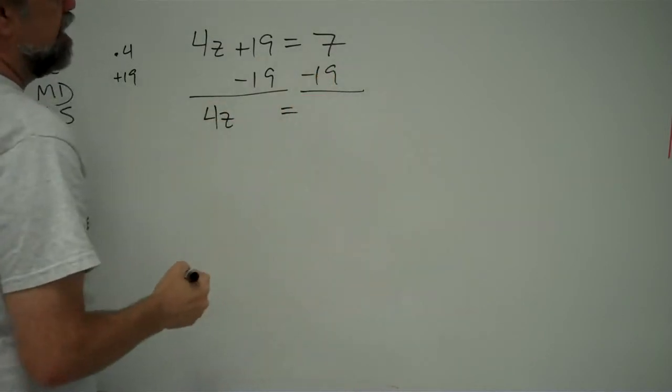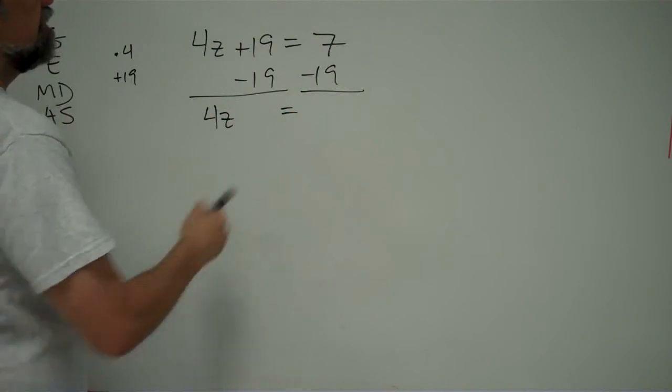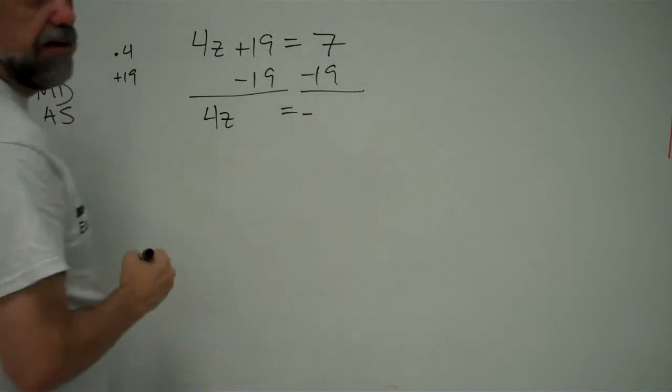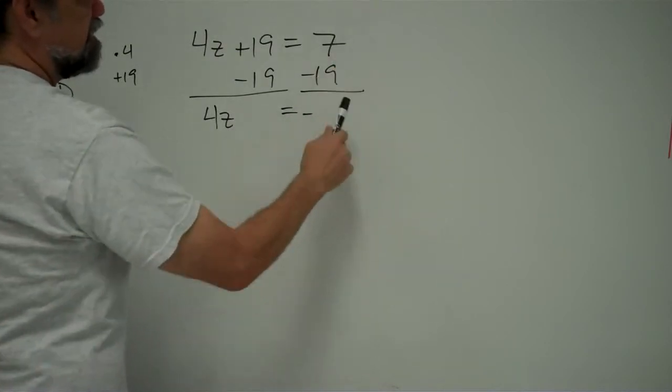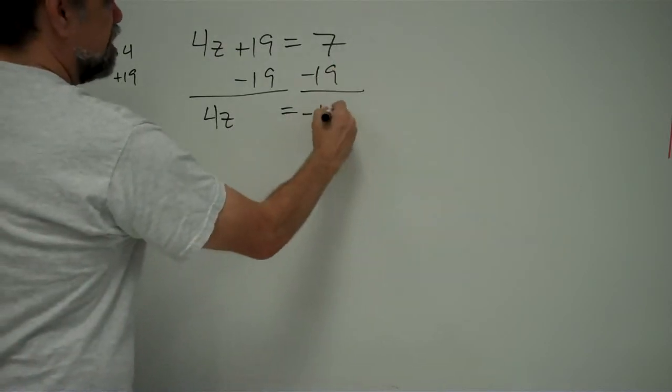4z plus 19 minus 19 is just 4z. 7 minus 19. Hang on for a second. Let's see. We've got a little number minus a big number, and that gives us a negative number. And negative what? Well, let's think. 19 minus 7 is 12, so that means this is going to be negative 12.